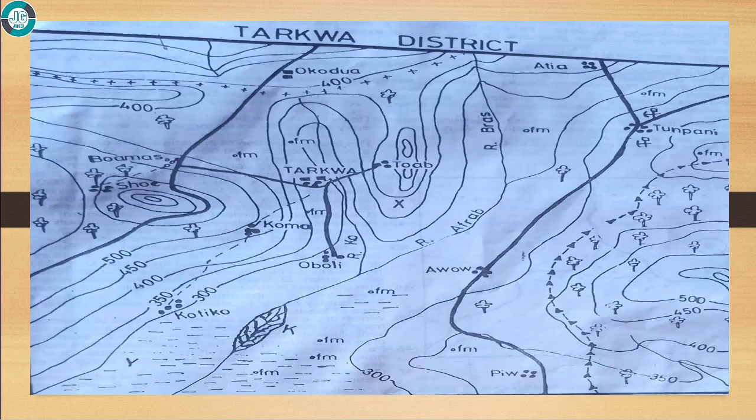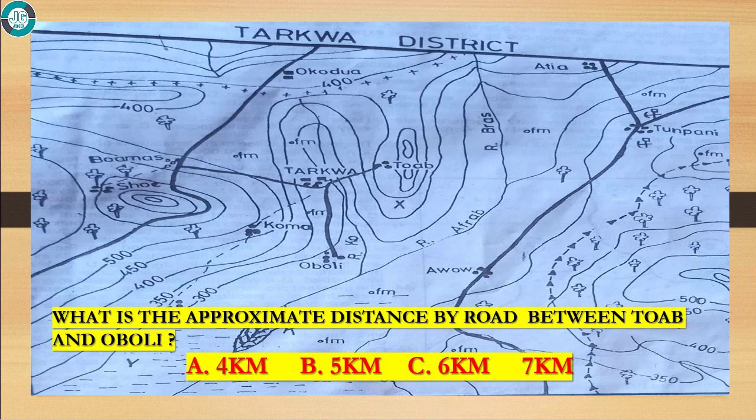This is the map. Study it carefully. Question 1: What is the approximate distance by road between Tuap and Oboidi?